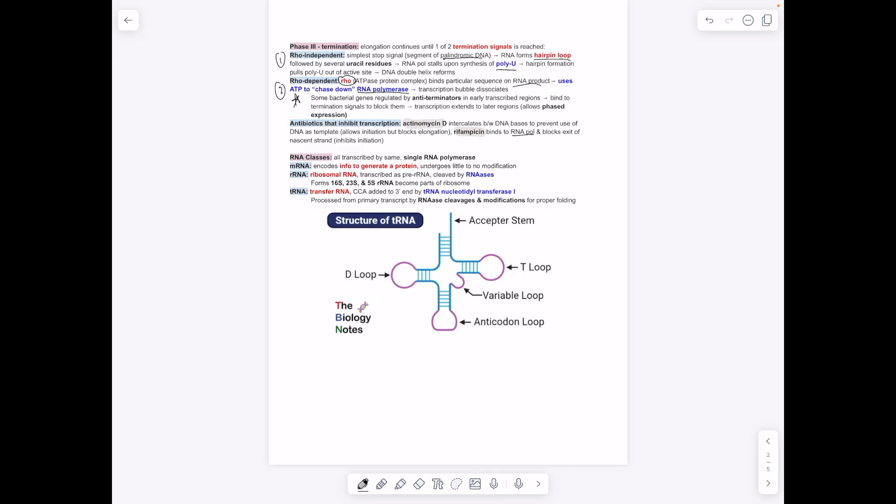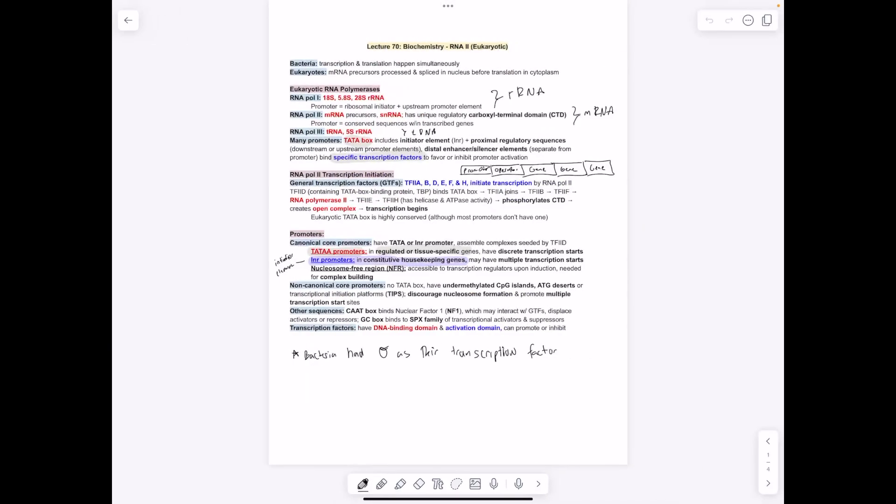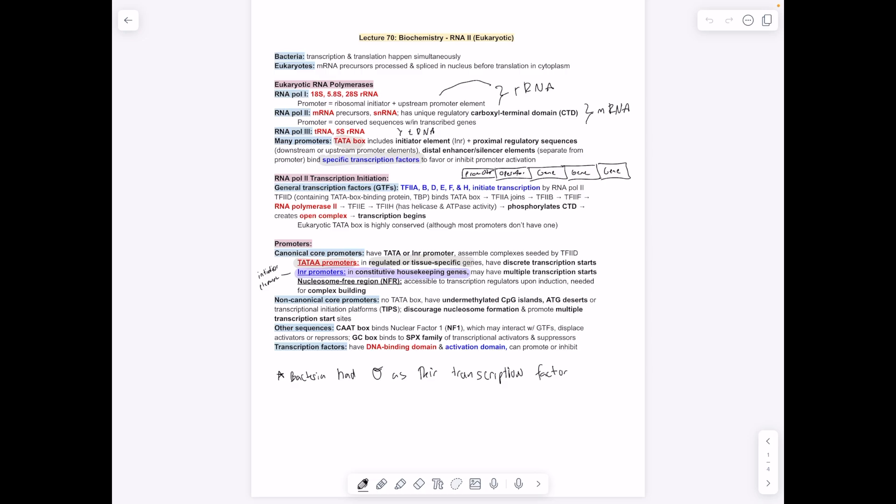Then we have mRNA, rRNA, tRNA. It's important—in prokaryotes, these are all made by a single RNA polymerase, whereas in eukaryotes, we have three different types of RNA polymerases. In particular, we have RNA polymerase 1, which makes rRNA, polymerase 2 makes mRNA, polymerase 3 makes tRNA.